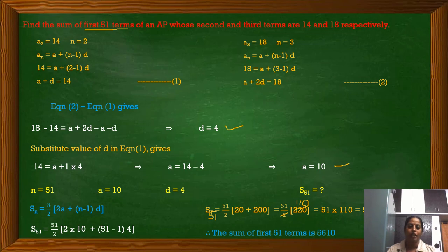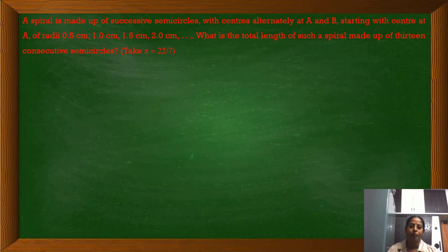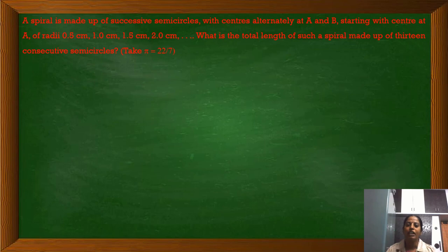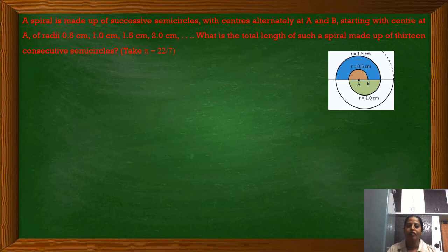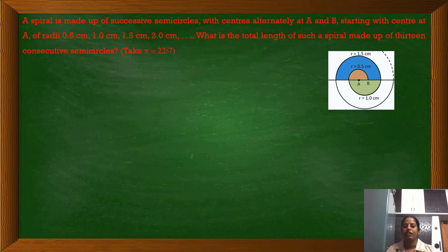Let us move on to one more important and interesting problem. A spiral is made up of successive semicircles with centers alternately at A and B, starting with center at A, of radii 0.5 cm, 1.0 cm, 1.5 cm, 2.0 cm. What is the total length of such a spiral made up of 13 consecutive semicircles? Take pi equals 22 by 7. The centers alternate: first semicircle has center A, second has center B, third has center A, fourth has center B, and so on.